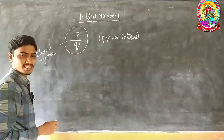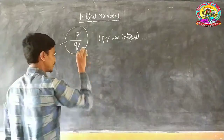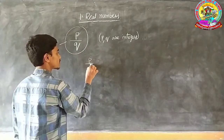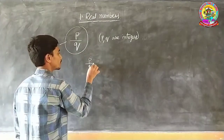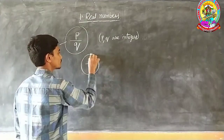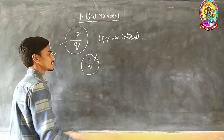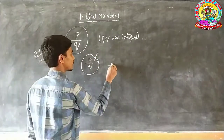What is meant by an irrational number? A number which cannot be expressed in the form of P by Q is called an irrational number.